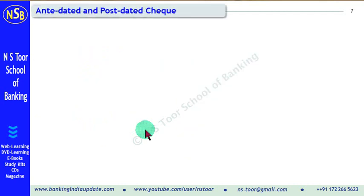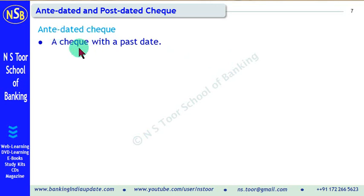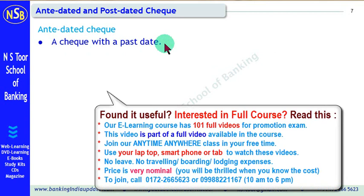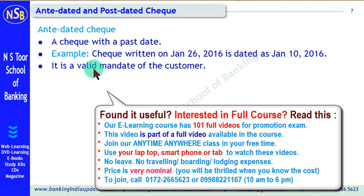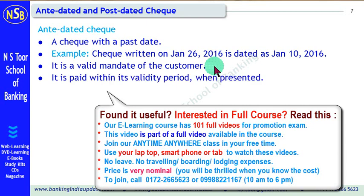Now, types of checks from the date point of view. Taking into consideration the date of the check, checks can be of different types. The first one is an anti-dated check. An anti-dated check is a check where the date written on the check is a past date — the check is presented for payment today, but the date written is a past date. For example, a check presented on January 26th is dated January 10, 2016. Such a check is an anti-dated check.